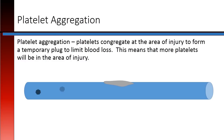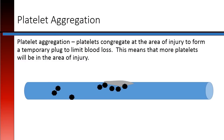Platelet aggregation. The platelets congregate at the area of injury to form a temporary plug to limit blood loss. This means that more platelets will be in the area of injury.